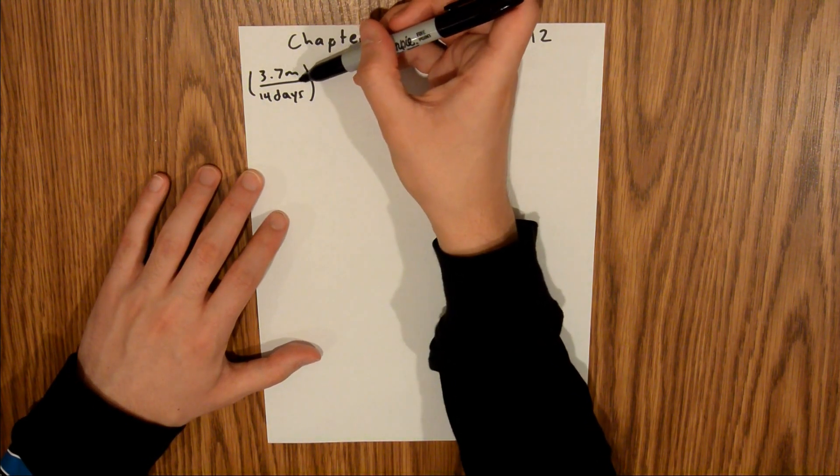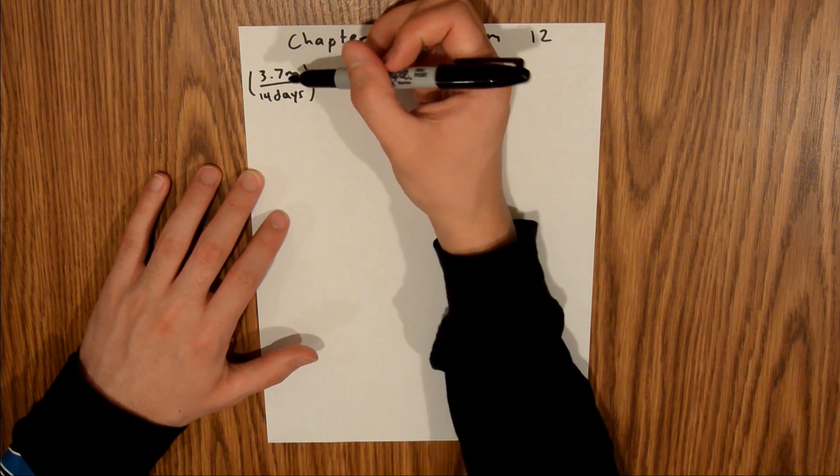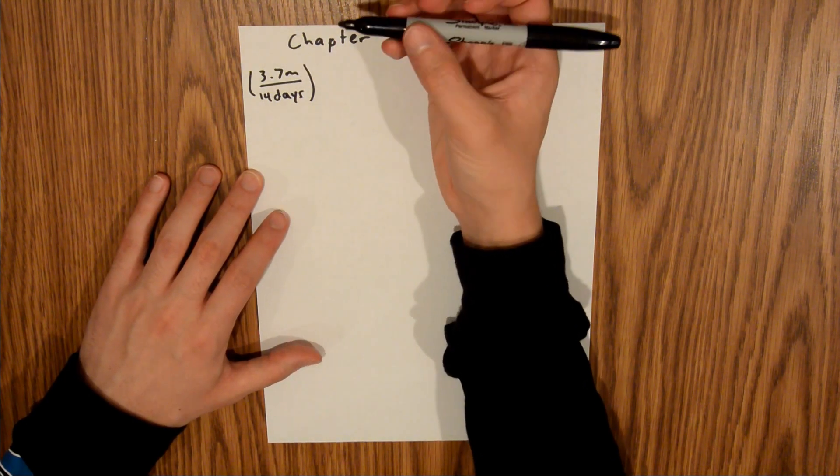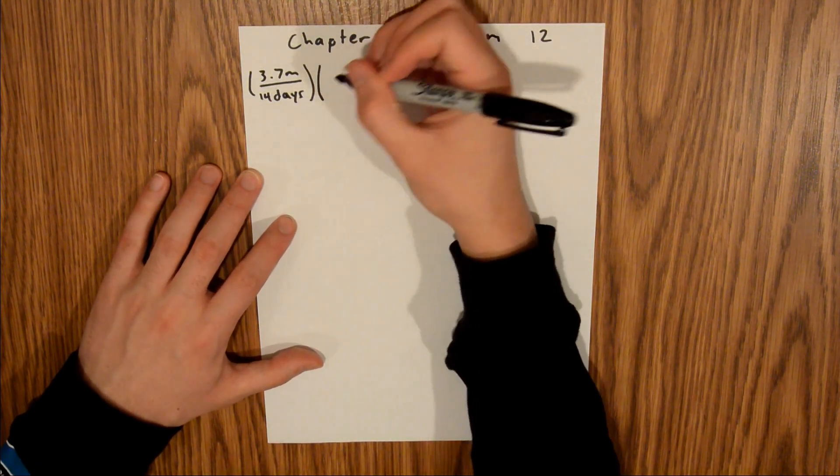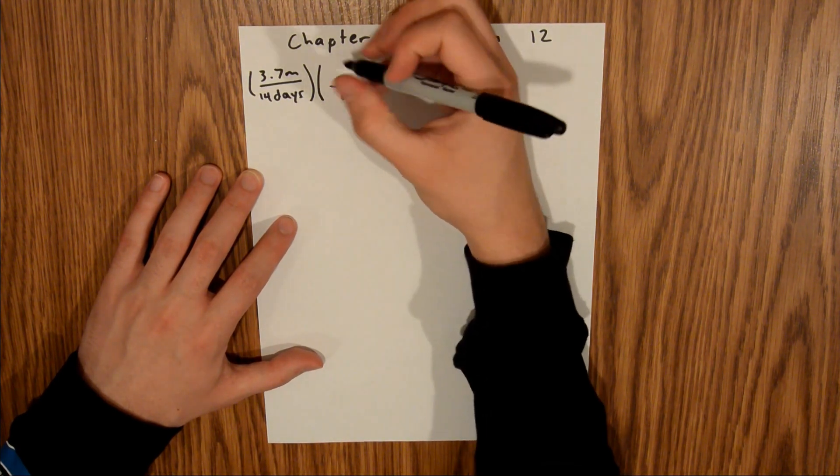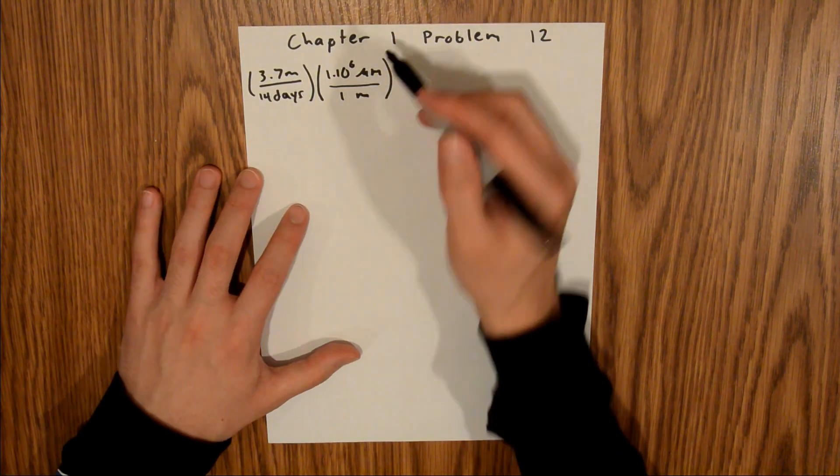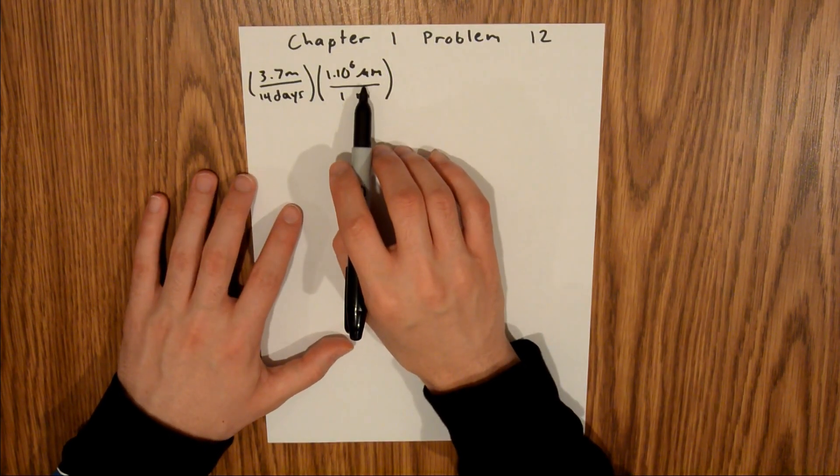Since we want this in micrometers and this in seconds, we can actually convert them separately, and so I'll start with the meters since that's a little easier. And so what we know is that in 1 meter, we have 1 times 10 to the 6th micrometers. That's Greek letter mu, which signifies micro.